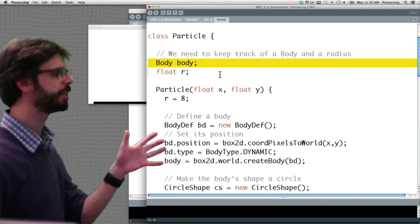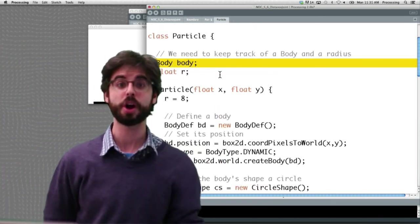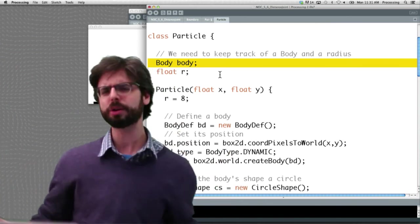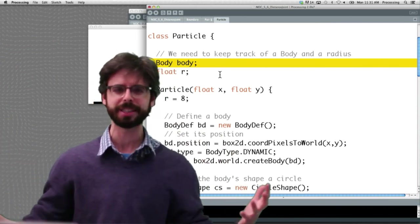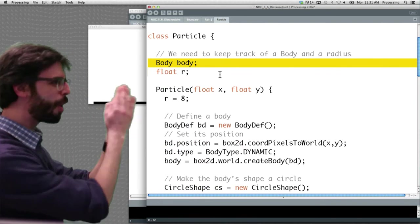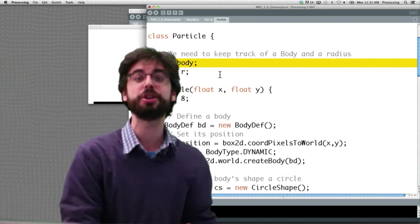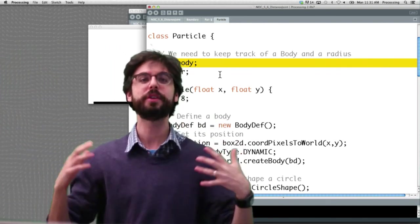Look at this class here. This class is the particle class. This is essentially what we have in all of our other examples. We make this particle or box or thing object, and that thing object has as a reference inside of itself, a Box2D body that controls all of its physics.